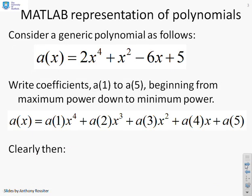First then, let's go back and look at polynomials. Take a generic polynomial. I've just made this one up. It's a bit arbitrary. So a(x) equals 2x^4 plus x^2 minus 6x plus 5.